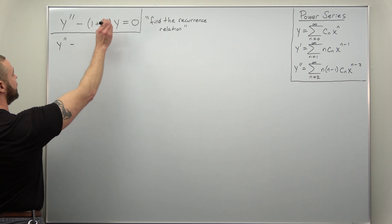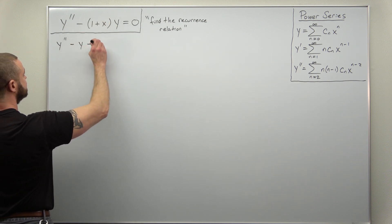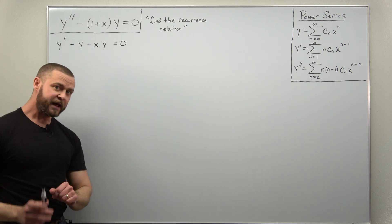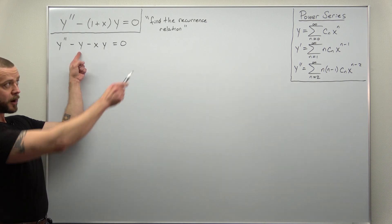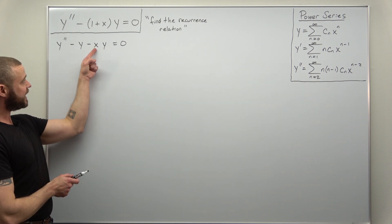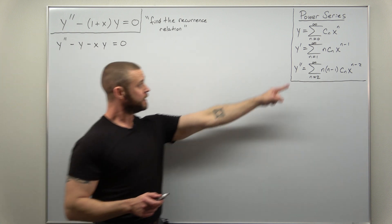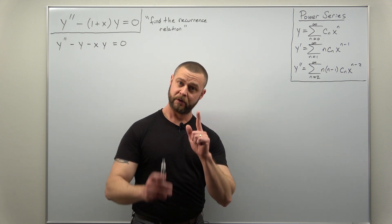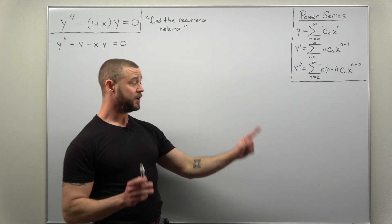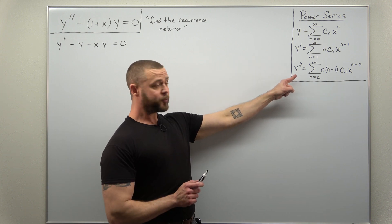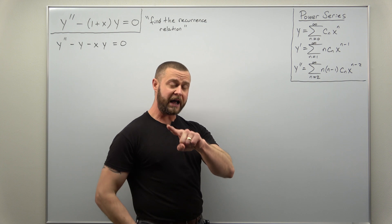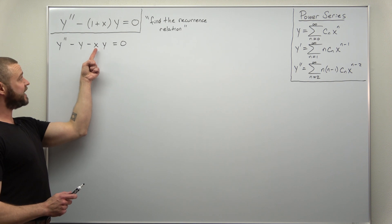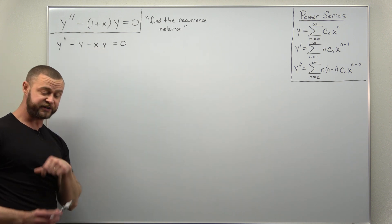We'll write this as y double prime minus y minus xy. The reason we split it up: here we have our power series for y, but x multiplying y is going to bump x to the n up to x to the n plus 1. Let's plug in our power series — the power series for y double prime, and the power series for y in two spots: the middle term, which is y, and the last term, which has x times y — that's where the exponent will be increased by 1.